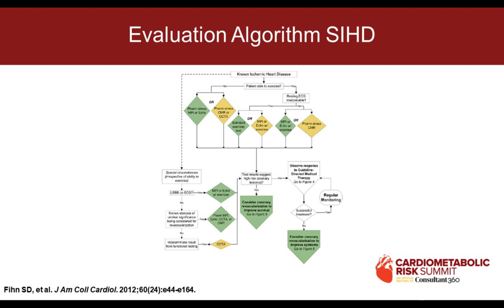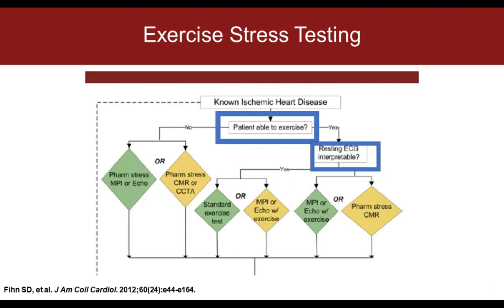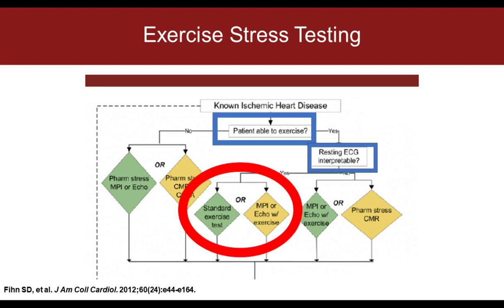Calcium score is a window into ischemia. On the x-axis is Framingham risk; on the y-axis is likelihood of ischemia. Adding calcium score to Framingham risk gives better risk stratification — the higher the coronary calcium score, the higher the risk. In an intermediate population with 15 to 84% risk, a negative calcium score dramatically reduces their risk. The algorithm says: if they can exercise, they should exercise with a treadmill; if their EKG is uninterpretable, you have to add imaging.